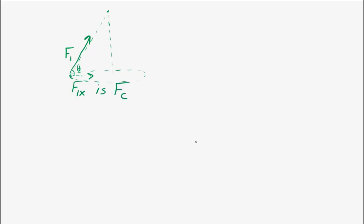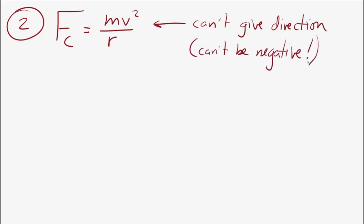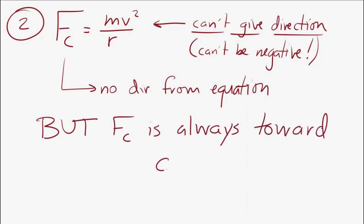We'll see the first case today and the second case next time. The other thing about centripetal force: the equation centripetal force equals mv squared over r is very useful, but it does not give you direction. Mass, radius, and v squared cannot be negative, so the result is always positive. However, you always know the direction — a centripetal force always points toward the center.